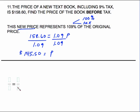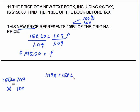For the proportion approach: 100% represents the old price, that's X. We have 109%, which includes the tax, and that corresponds to the amount of $158.60. Cross-multiply: 109X equals $158.60 times 100. Divide everything by 109, and of course we get $145.50.